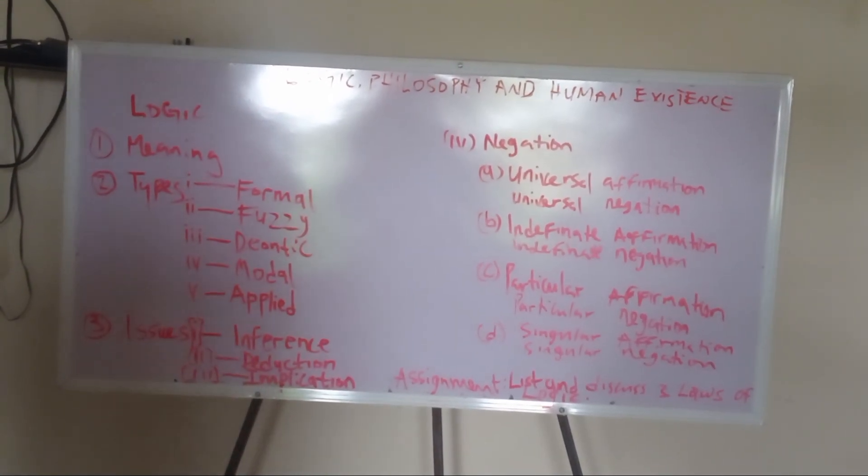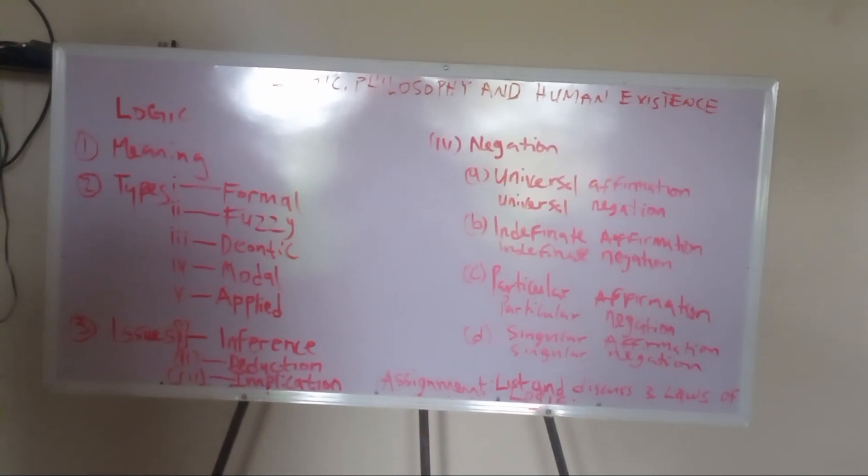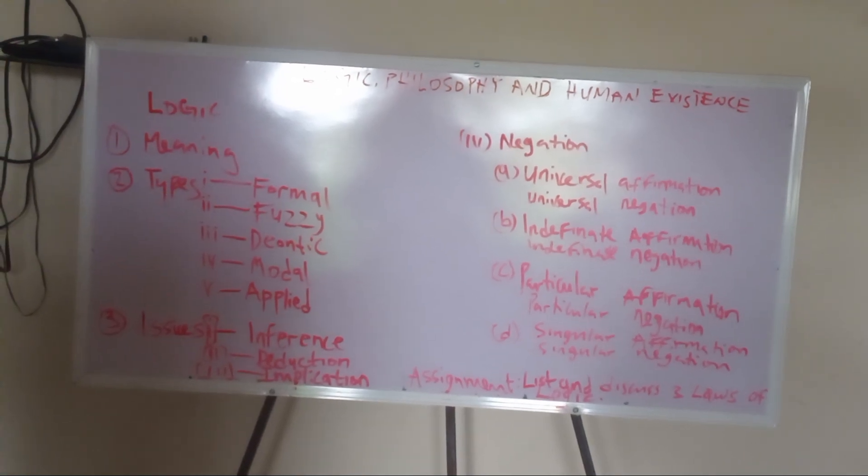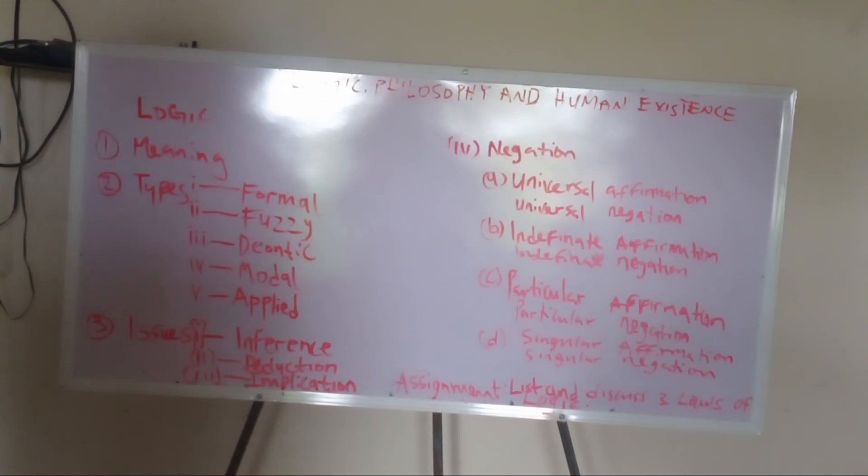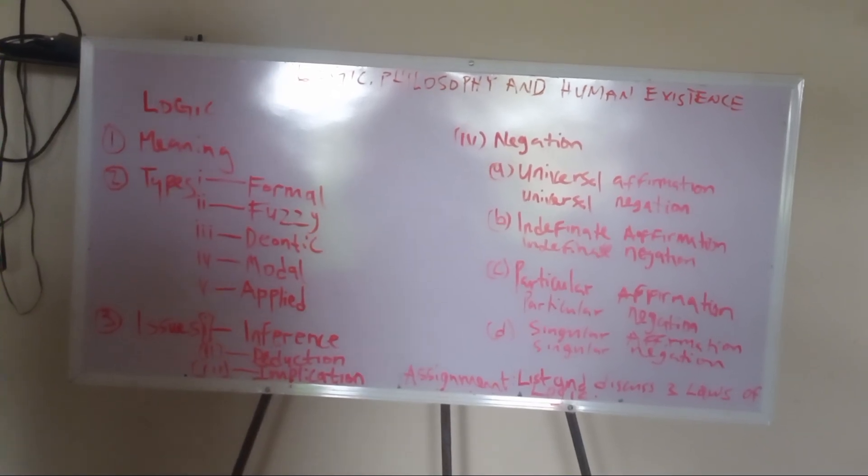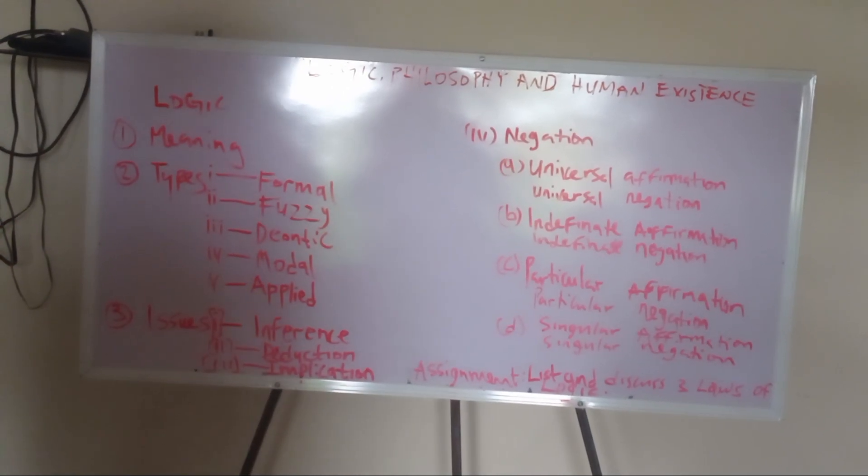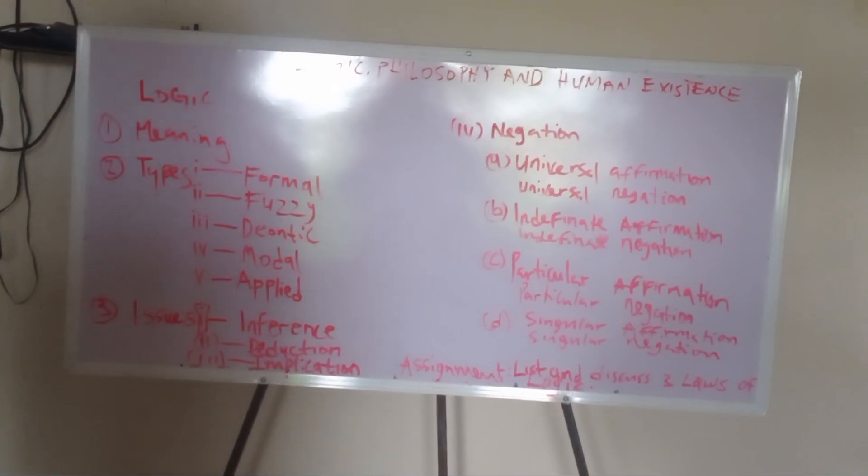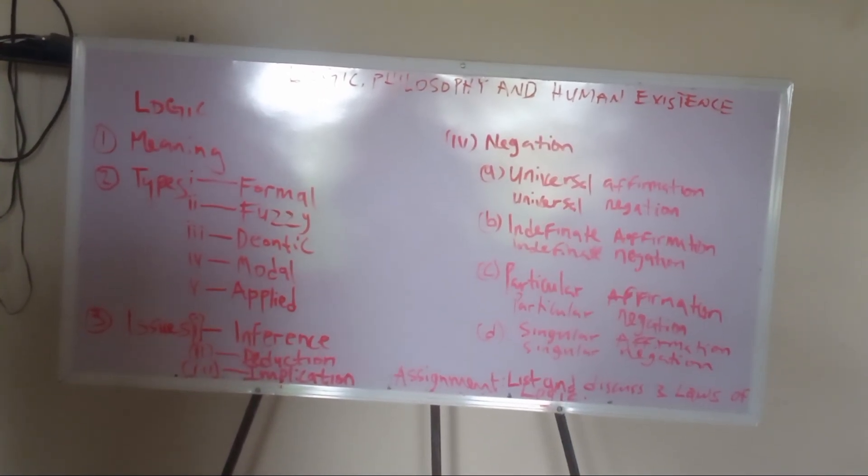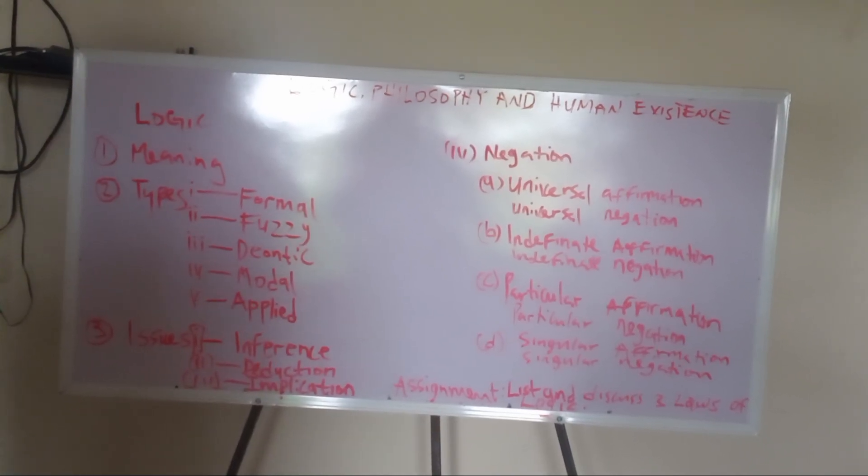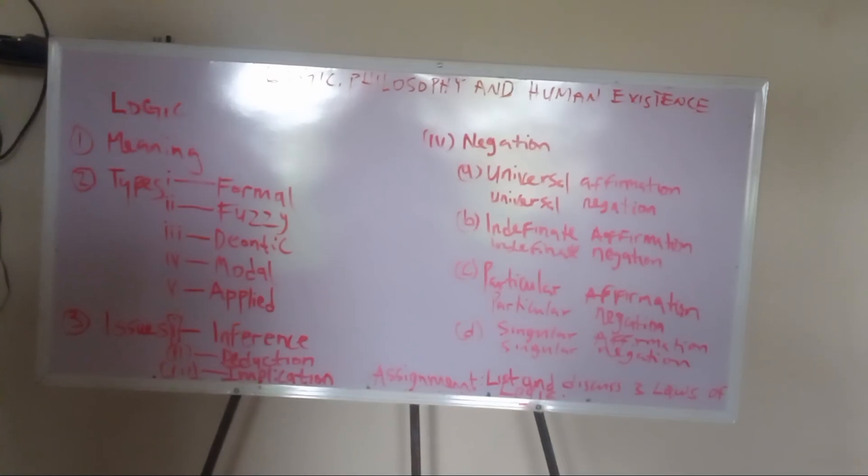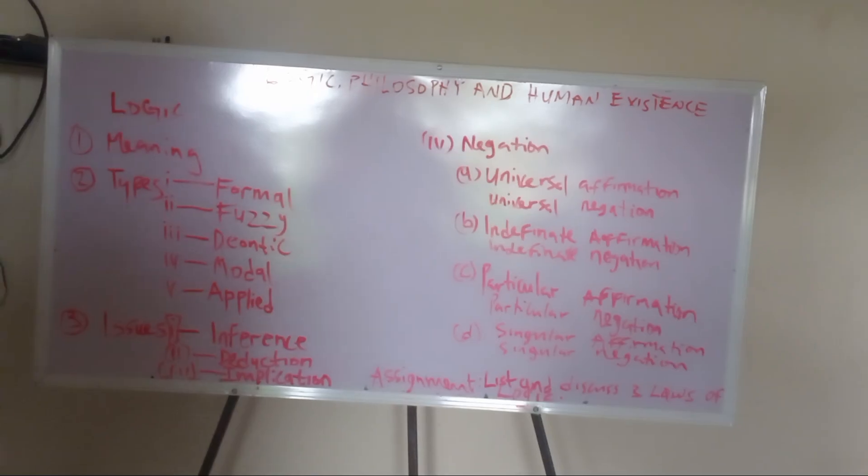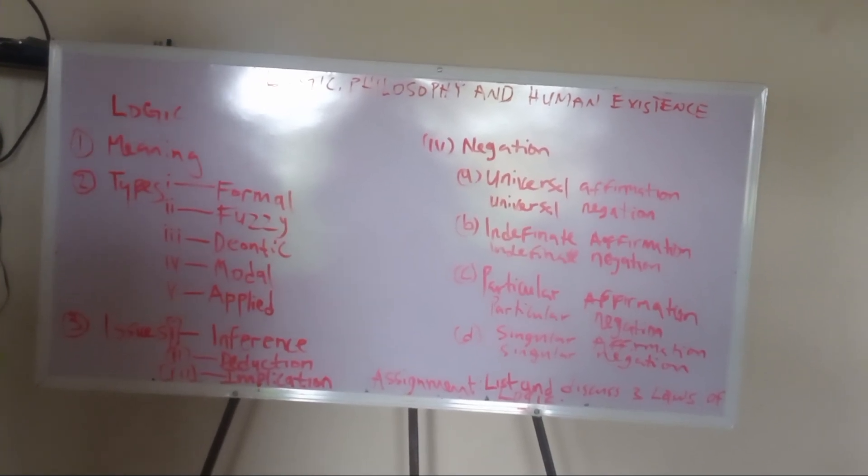Talking about indefinite affirmation and negation, we will talk about some. You are not sure. So you say, bitter is an alpha. Some boys are scholars. Some girls are scholars. I am not sure. I need to go further to test that assumption. That is why it is indefinite. Some boys are scholars. Some girls are scholars. We will say, some bitter is an alpha. If you want to negate it, what will you say? Some bitter is not an alpha. Some girls are not scholars. Some boys are not scholars. That is the negation.